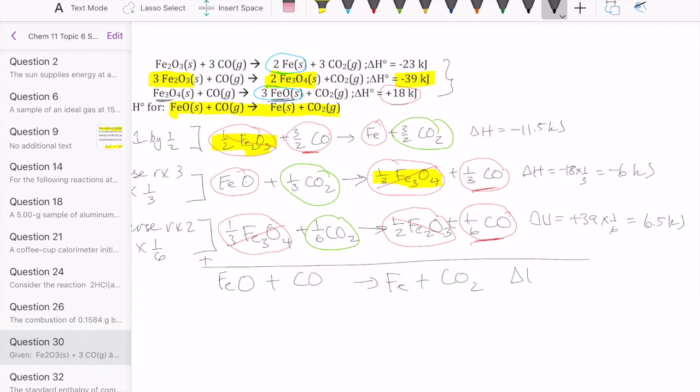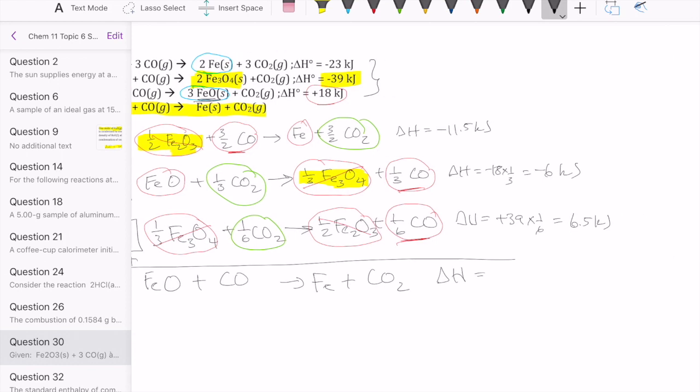So that means to get the delta H, we just need to add all the numbers that we have for the delta H of the reactions after we make those changes. And that would add up to negative 11 kilojoules.